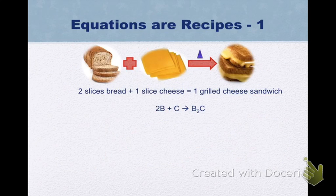It's a lot like a recipe, so I like to begin by thinking about a simple recipe, grilled cheese sandwiches. So in a simple recipe for a grilled cheese sandwich, you need two slices of bread plus one slice of cheese to make one grilled cheese sandwich. And you can see I've converted that recipe into a chemical equation.